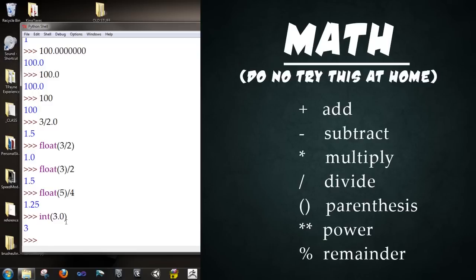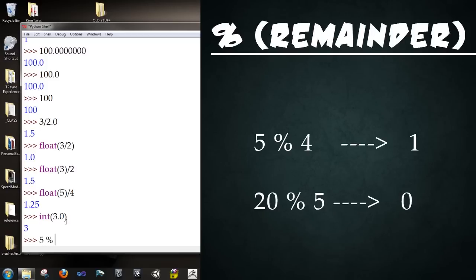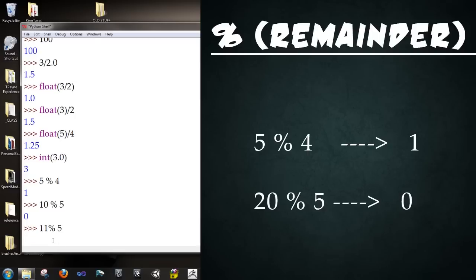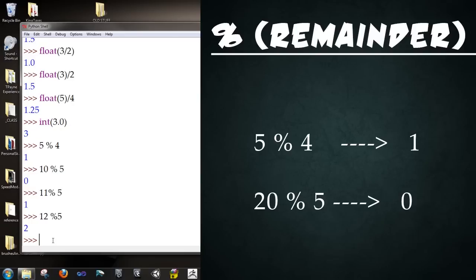Some other math operations you may want to know about is the remainder. And the way you use that is you type in 5 percent sign 4. So go ahead and type that in. And then press enter. So what this is saying is how much remains after I take out a whole bunch of number 4s out of 5. 1 remains. And so another example of this would be like if I were to punch in 10 percent sign 5. Go ahead and type that in. And what you get out is 0 because 10 is divisible by 5. Go ahead and type 11 percent 5. And you'll be spit out 1. It's because 1 overflows.